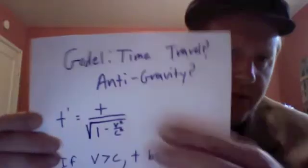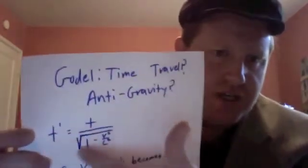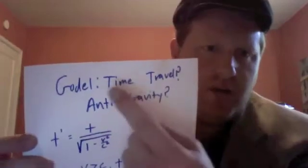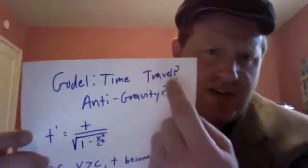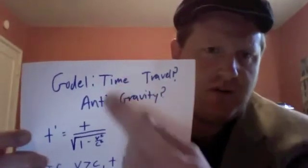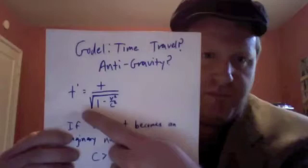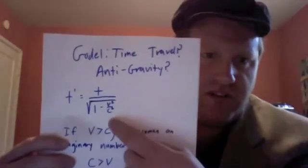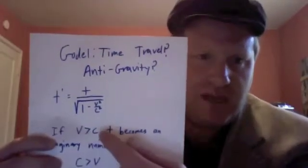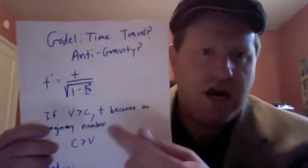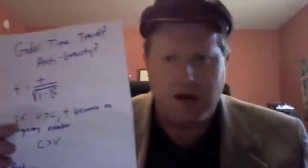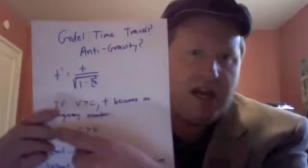Let's start off with what we all agree upon. This is Einstein's time dilation equation. And by the way, if my speculation is correct, I'm thinking that Gödel's equations would not only lead to time travel but, through a strange byproduct, anti-gravity. So: t prime is equal to t over the square root of 1 minus v squared over c squared. If v were greater than c — which it can't be under Einstein's relativity — t becomes imaginary, and we don't want an imaginary value for time. So bottom line: c is greater than v. No physicist worth their salt disagrees with Einstein's relativity.